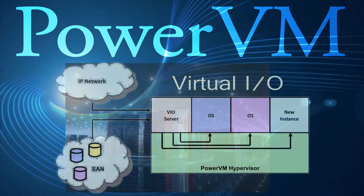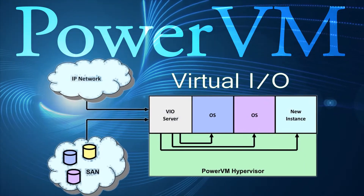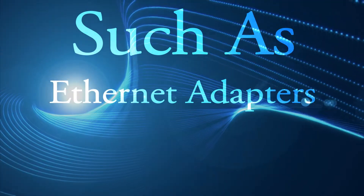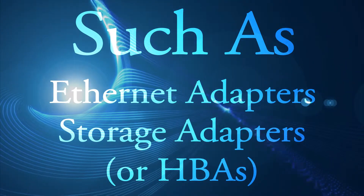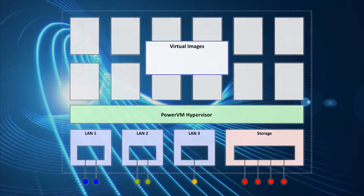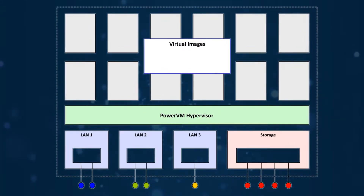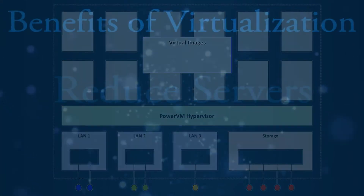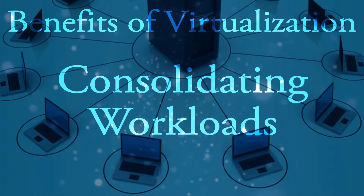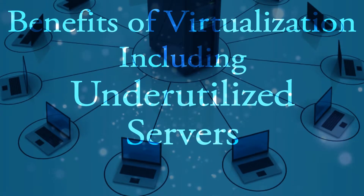Using PowerVM, you can create Virtual I/O or VIO servers that own the physical hardware such as Ethernet adapters and storage adapters or HBAs. These VIO servers can share or virtualize those adapters across multiple application LPARs. In essence, you reduce the number of physical servers by consolidating multiple workloads, including those on underutilized servers.